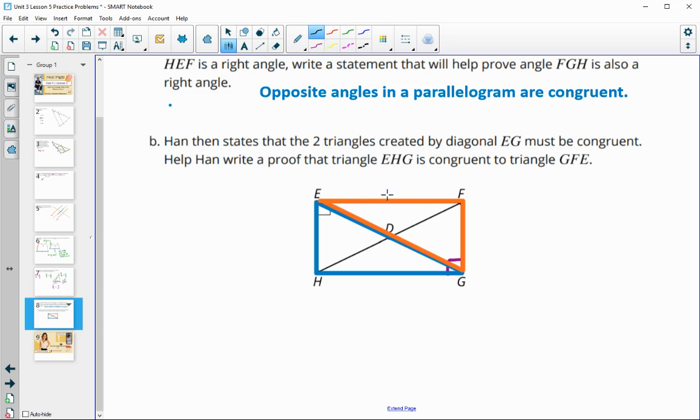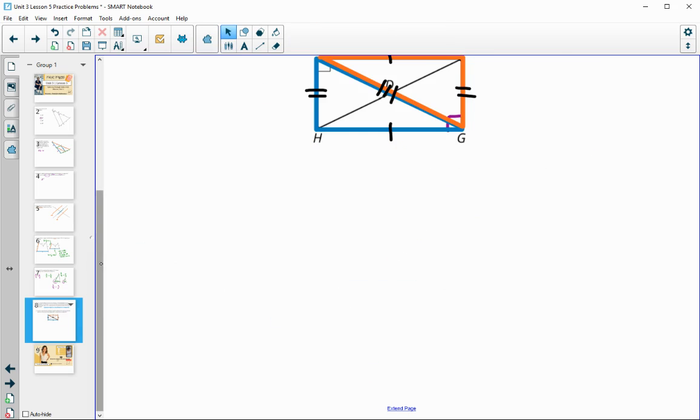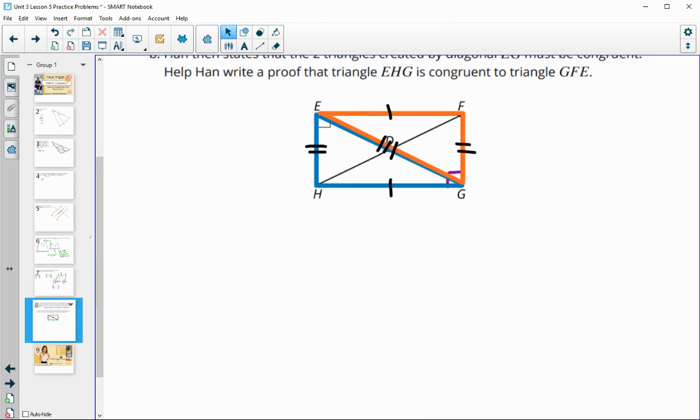Things that we know, we do know that opposite sides in a parallelogram are congruent. So we would know that these top and bottom are congruent and left and right are congruent. And then we also know that EG is in both the orange and the blue triangles, so that's going to be congruent to itself. And that would help us prove the triangles are congruent because we know all three sets of sides are congruent. So that's our plan.